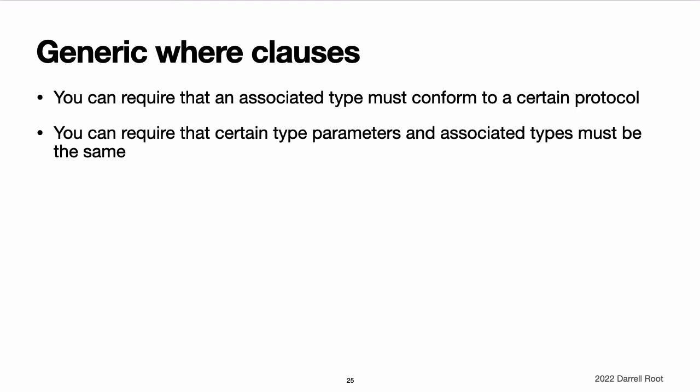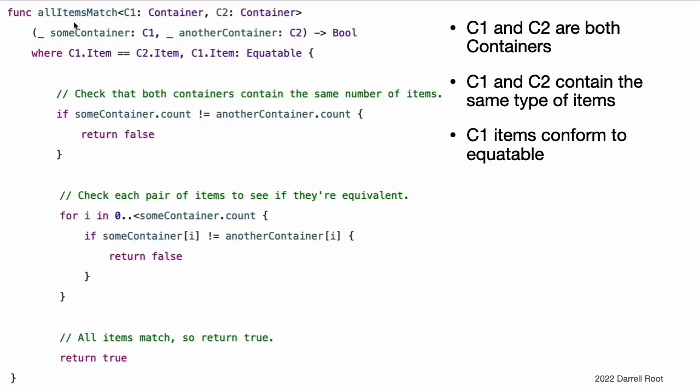Generic where clauses. Type constraints enable you to define requirements on the type parameters associated with a generic function, subscript, or type. It can also be useful to define requirements for associated types. You do this by defining a generic where clause. A generic where clause enables you to require that an associated type must conform to a certain protocol, or that certain type parameters and associated types must be the same. A generic where clause starts with the where keyword, followed by constraints for associated types or equality relationships between types and associated types. You write a generic where clause right before the opening curly brace of a type or function's body. This example defines a generic function called allItemsMatch, which checks to see if two container instances contain the same items in the same order. The function returns a boolean value of true if all items match and a value of false if they do not. The two containers to be checked do not have to be the same type of container, although they can be, but they do have to hold the same type of items. This requirement is expressed through a combination of type constraints and a generic where clause.